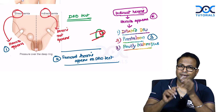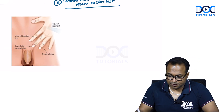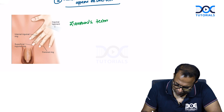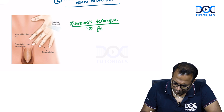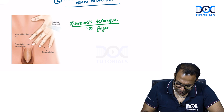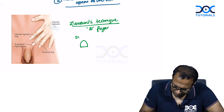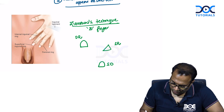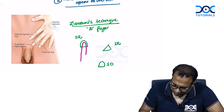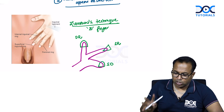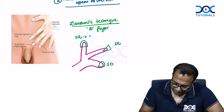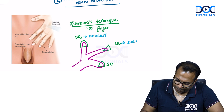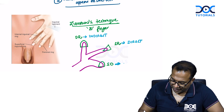The three-finger technique is called Zeeman's technique. Three fingers are placed on three openings: one finger on the deep ring, one finger on the superficial ring, and one finger on the saphenous opening. Ask the patient to cough. If the impulse is felt at the deep ring it is indirect hernia; at the superficial ring it is direct hernia; at the saphenous opening it is femoral hernia.